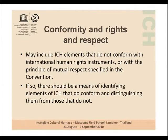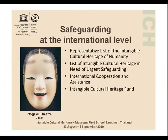Conformity and rights and respect — this is a check for the people putting together the inventories to make sure that all the elements included are in conformity with international human rights instruments or the principles of mutual respect specified in the convention. That's at the national level, so countries, governments, and various other agencies who operate within a country, including at the local level, have a responsibility to do all of those different things.